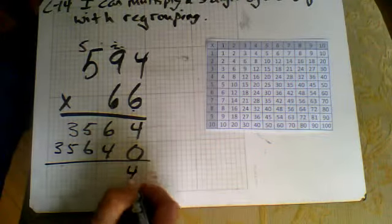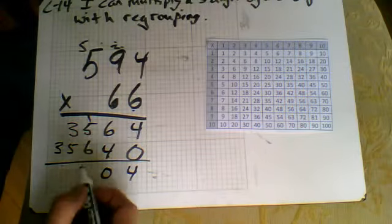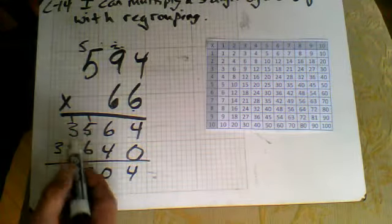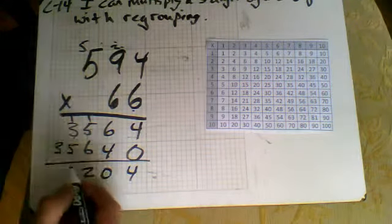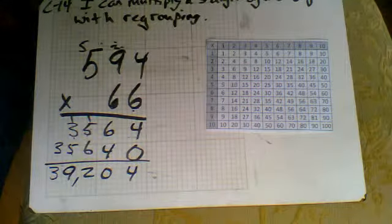Add that up. 10, carry over, 6, and a 5 and a 6 would make a 6. So two 6s would make a 12. Carry over, 5, 6, 7, 8, and 9. And add your 3 in there. We have 39,204.